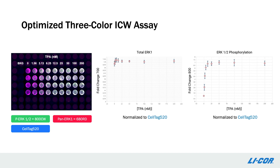Once all of the important parameters are optimized, the in-cell western assay is ready to use to answer experimental questions. In our ERK phosphorylation example, HeLa cells were treated with increasing concentrations of TPA, which should induce ERK phosphorylation. Phospho-ERK was detected in the 800 channel, pan-ERK was detected in the 700 channel, and CellTag 520 was used for normalization. By plotting the change in signal in the 700 and 800 channels, we can see the impact of TPA on total ERK, which is minimal, and on phosphorylated ERK, which increases as TPA increases, as we expect.